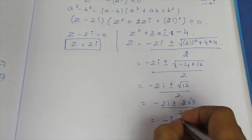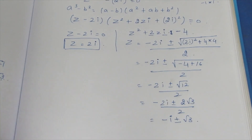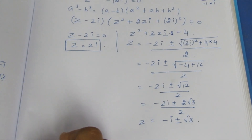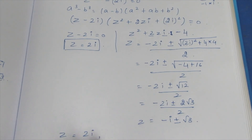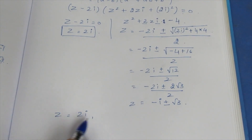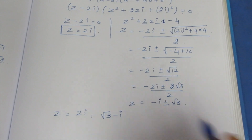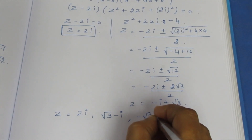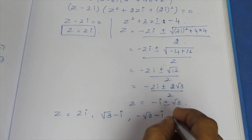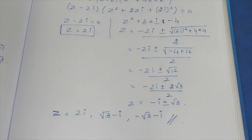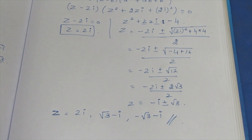So Z = -i ± √3. The two values are Z = √3 - i and Z = -√3 - i. These are the three roots in total. This is a very easy method compared to polar form. Thank you.